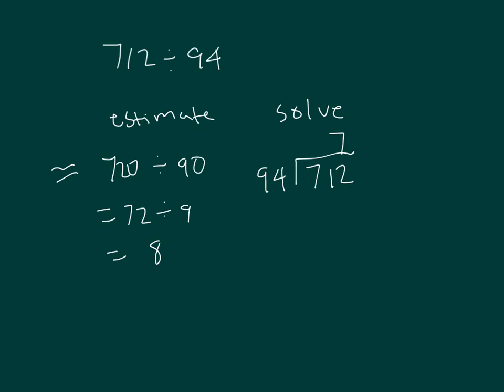7 times 4 is 28, regroup of 2. 7 times 9 is 63, plus 2 is 65. I'm going to do my subtraction. 12 minus 8 is 4. 7 becomes a 6, and 0 becomes 10. 10 minus 5 is 5. So the remainder is 54.